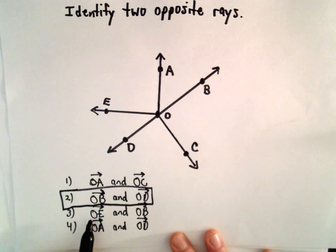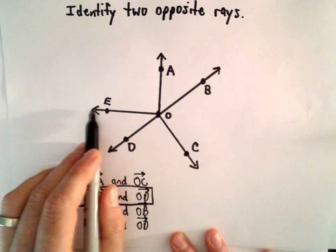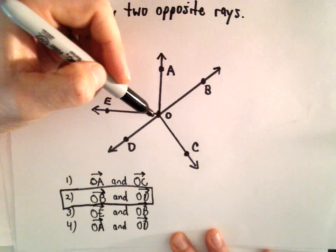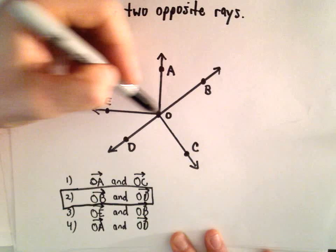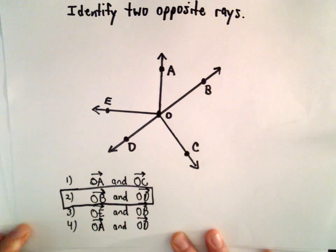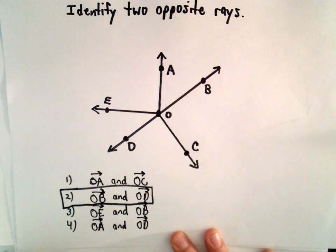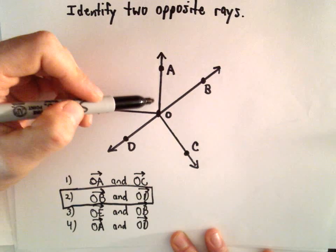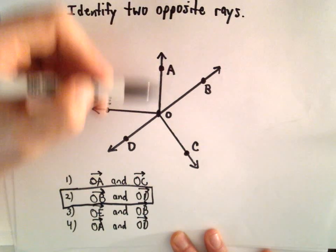We've got the ray OE, so that would be this ray, and OB. Again, those do not form a straight line, so that's why answer choice number three wouldn't work.